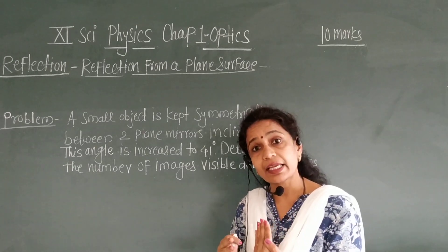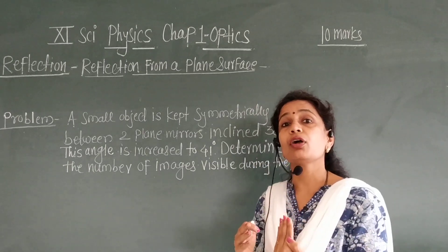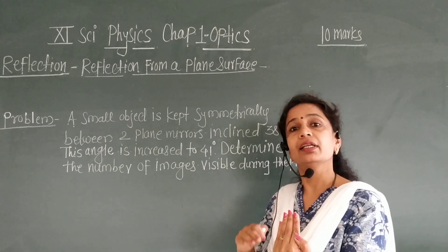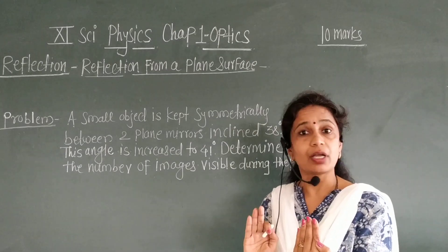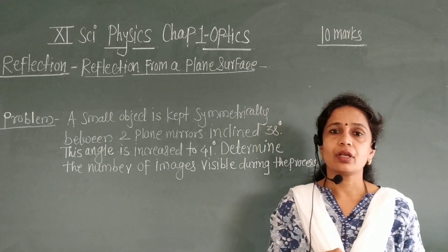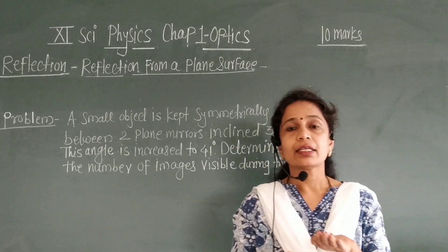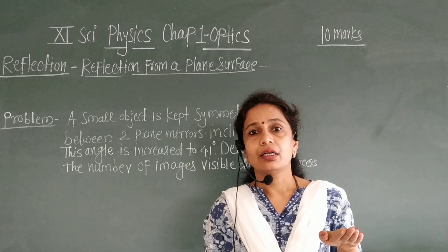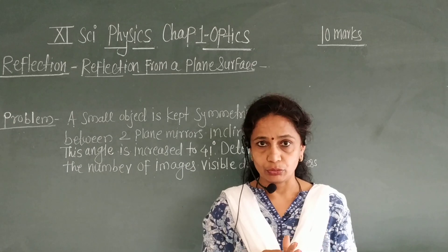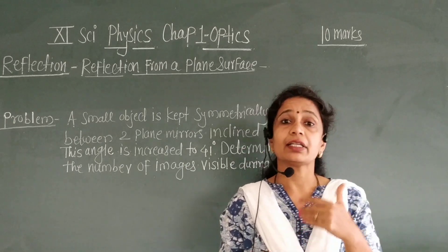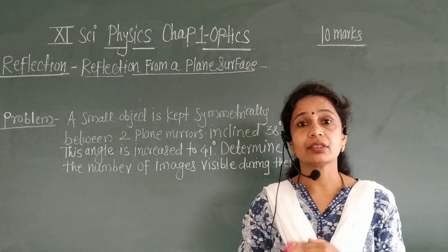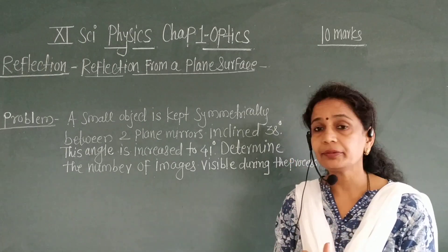Again, the image is at the same distance from the mirror as the object. The distance of the object from the mirror equals the distance of the image from the mirror. For example, if you are standing on the bank of a still water tank, your image is produced — a reverse image on the other side.